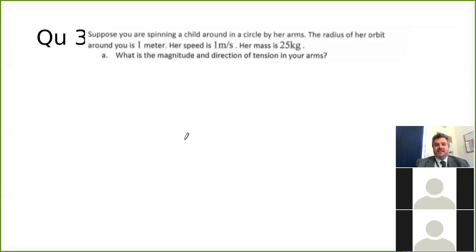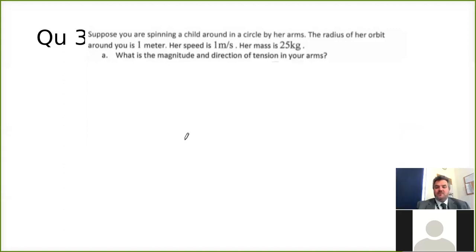The next question, we're now putting a bit of context in. So suppose you're spinning a child around in a circle by their arms. The radius of her orbit around you is one meter. Speed is one meter per second, and her mass is 25 kilograms. What's the magnitude and direction of tension in your arms? So you're holding on to the girl, think about what direction you're having to pull against. So the first thing is to recognize that tension is basically the centripetal force. And when you're given that, you can then work out the radius, the speed and the mass.